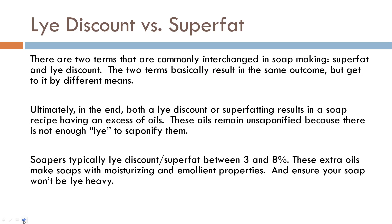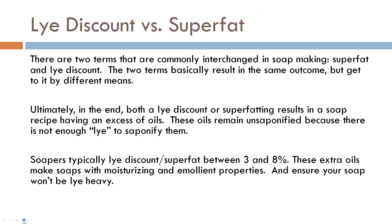The first thing I want to talk about is a lye discount versus super fat. The two terms are used interchangeably but they don't quite mean the same thing — they end up with the same result but get there by different methods. When we say super fat, we mean there is an excess of oils that will not get saponified, and we are trying to control which oils are not being saponified. This is very hard to do with cold process soap, but if you do hot process, you have more control over which oils saponify and which oils add to your super fat.